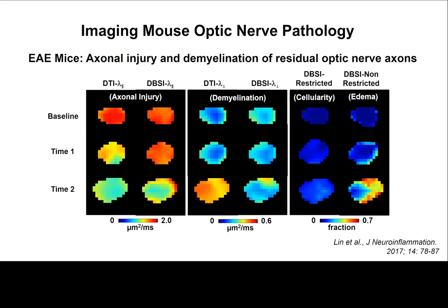This is the first application we did in the EAE mouse model, which is a multiple sclerosis model. We wanted to detect axonal injury and demyelination in this model. Looking at the same animal and same nerve before immunization, at onset, and two days after: the axial diffusivity from DTI shows a significant decrease, suggesting axonal injury.